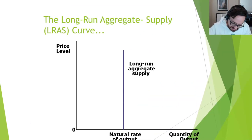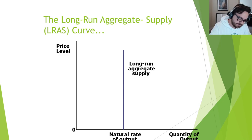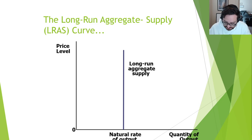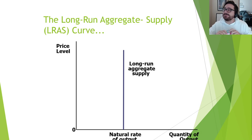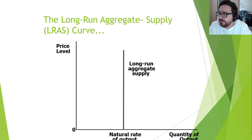So our long-run aggregate supply curve is actually a vertical one — because that idea of it coming back to the same spot means it's always returning to a specific X value. The long-run aggregate supply curve, abbreviated LRAS, is drawn on the same graph as the other two lines. It's drawn at a specific spot because it's where our economy always seems to gravitate to.